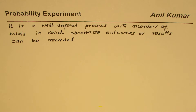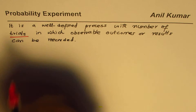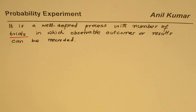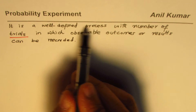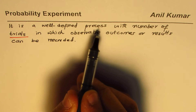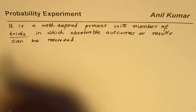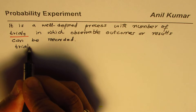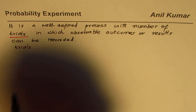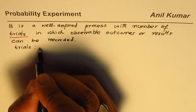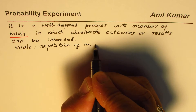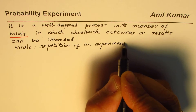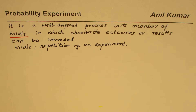One of the first words which comes to our mind is 'trials.' What do we understand by trials? Trials are repetitions of the experiment. When we say 'well-defined,' that means it is a process which can be repeated over and over again — that's the reason for having 'well-defined process' in our definition of a probability experiment.